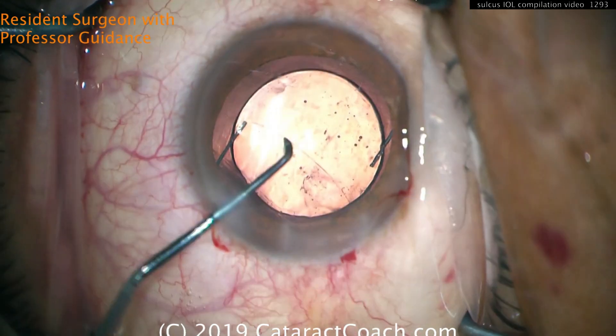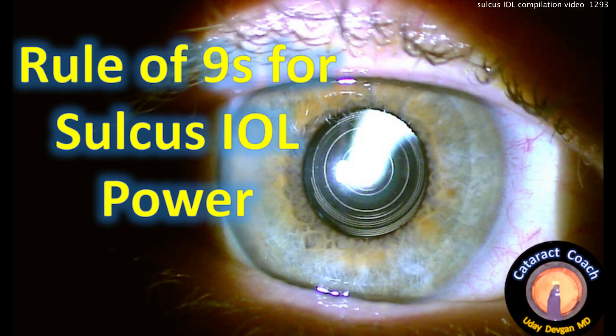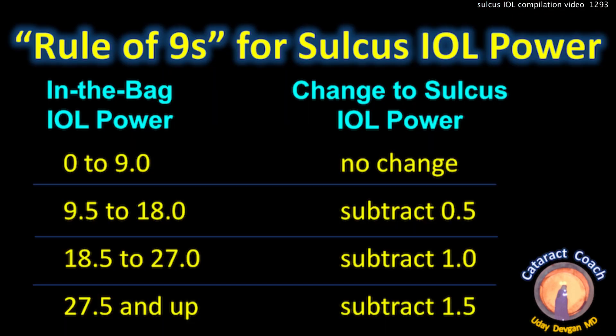The first thing to understand is how to calculate sulcus lens power — that's the rule of nines. If the IOL power is 0–9 diopters, there is no change from bag to sulcus. From 9–18, subtract a half diopter. From 18–27, subtract one diopter. And in that rare case above 27 diopters, subtract one and a half diopters from the IOL power.